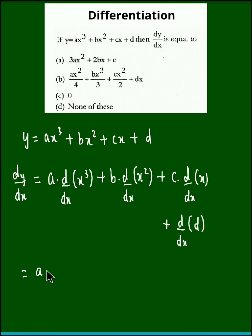So we obtain a times 3x square plus b times 2x plus derivative of x is 1, plus derivative of constant term is 0.